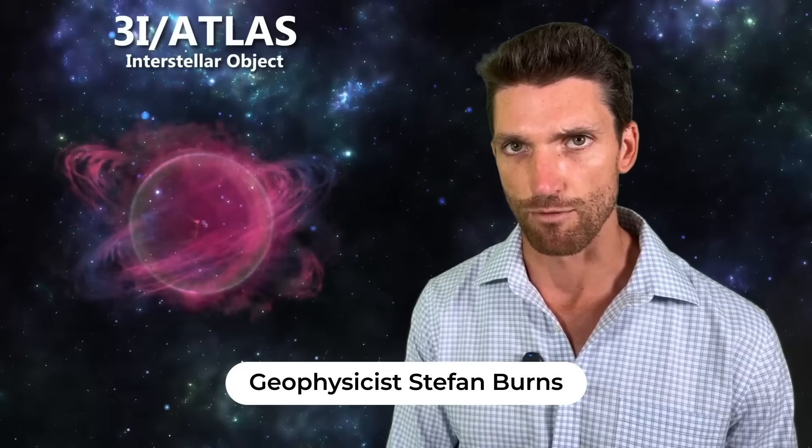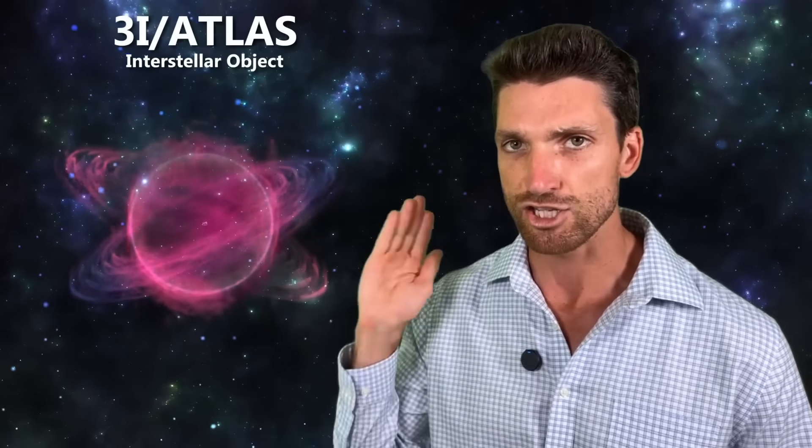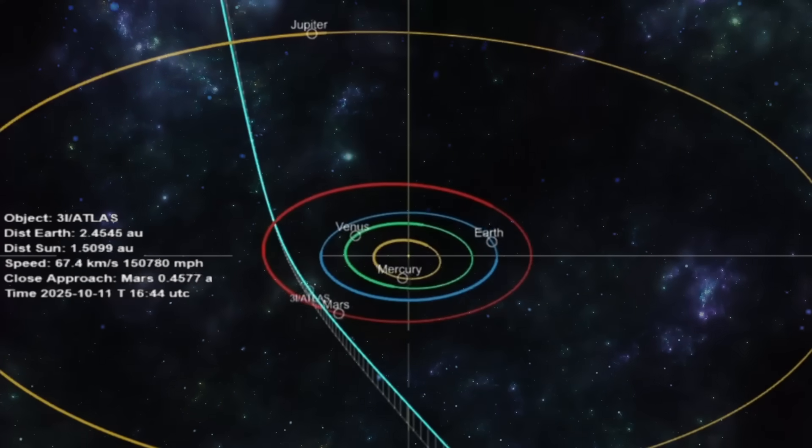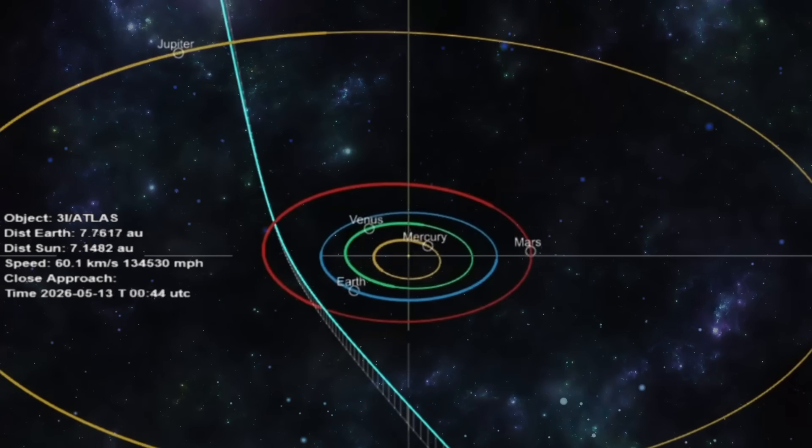Hey everyone, geophysicist Stefan Burns here. There is a huge interstellar object that is hurtling through our solar system at this moment in time. This is 3I Atlas and no one really knows what 3I Atlas is. So I call it an interstellar object.